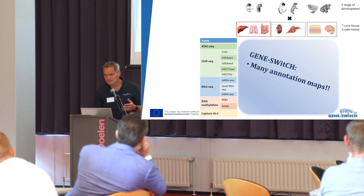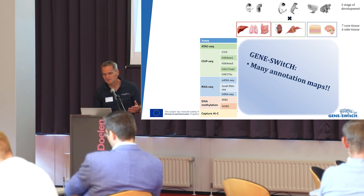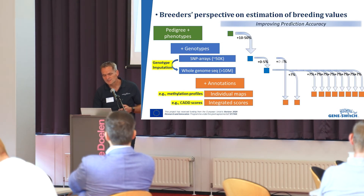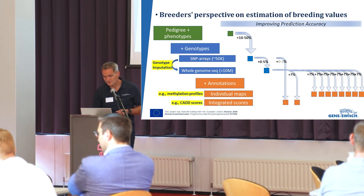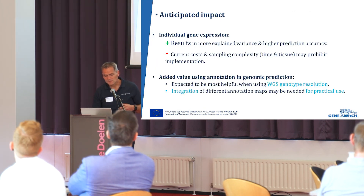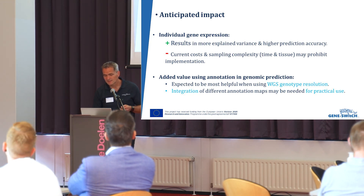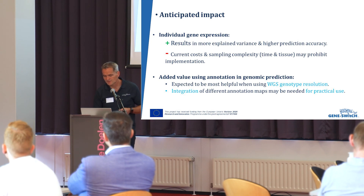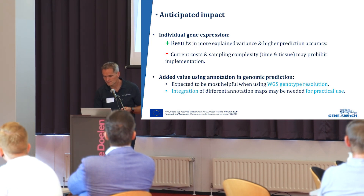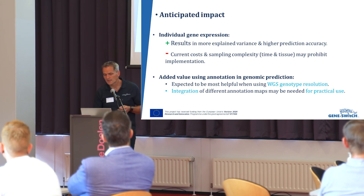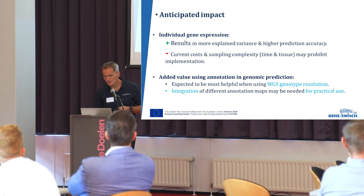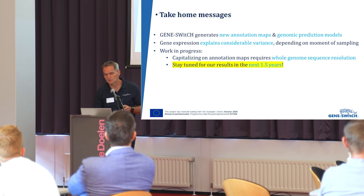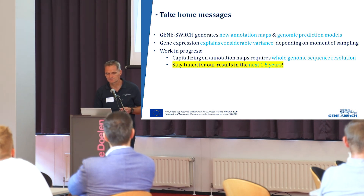In GeneSwitch we have many annotation maps across many tissues and different assays, and the question is which individual maps are most useful — still an open question that is difficult for breeders to navigate. Anticipated impact: gene expression results show added value, but there is a cost in sampling complexity. The added value of annotations — we still have to wait for the GeneSwitch results. The main point is: stay tuned for our results over the next one and a half years. Thank you.